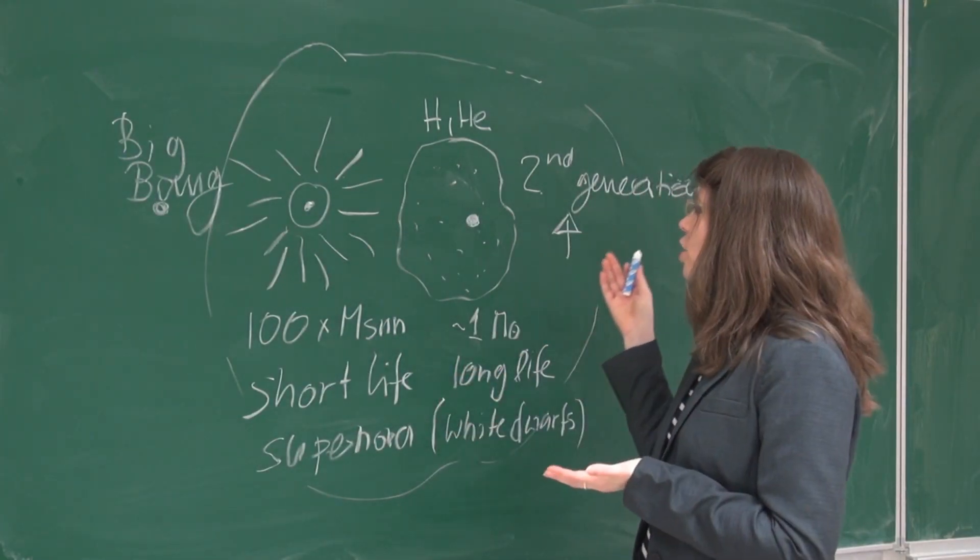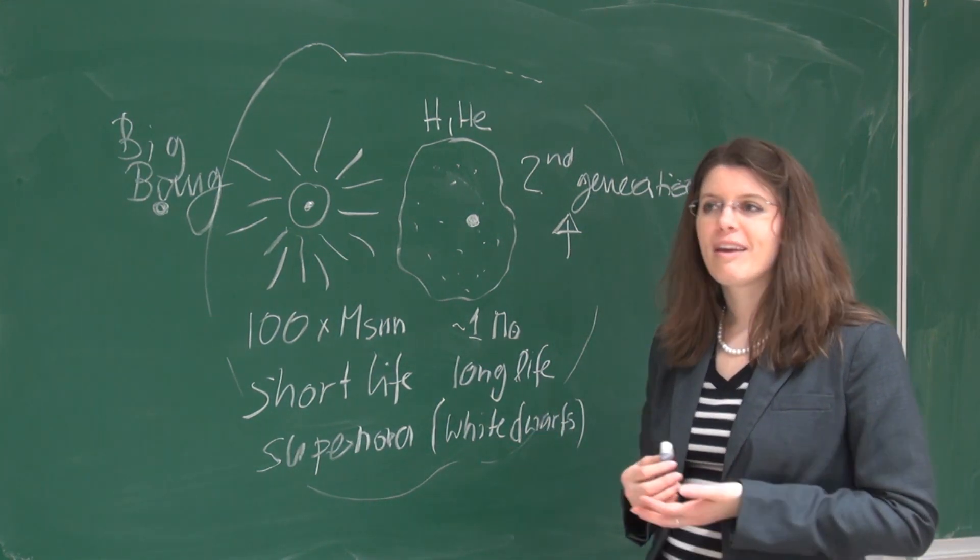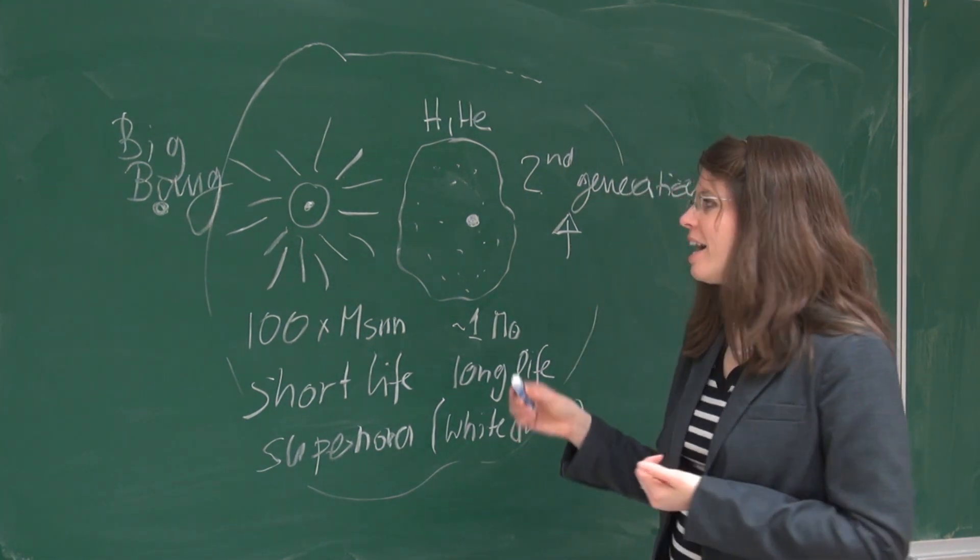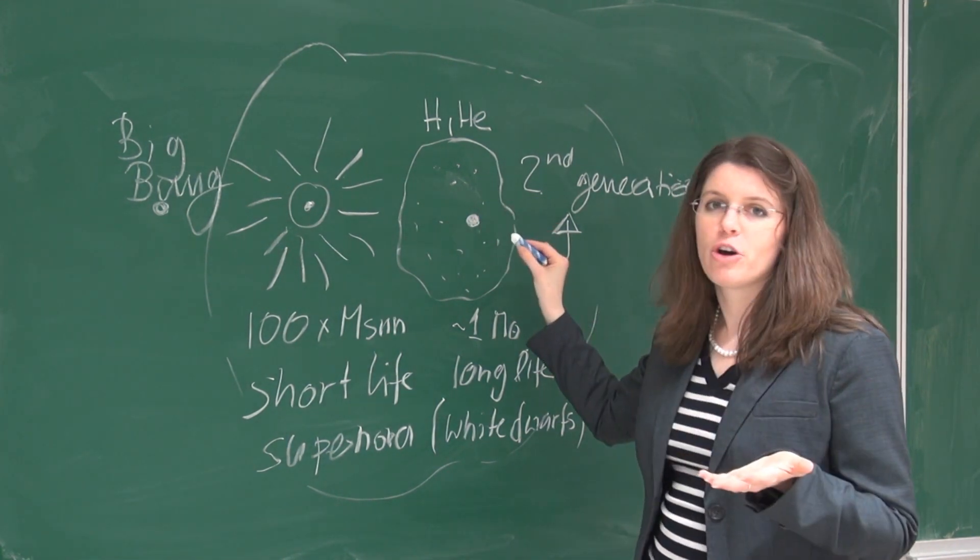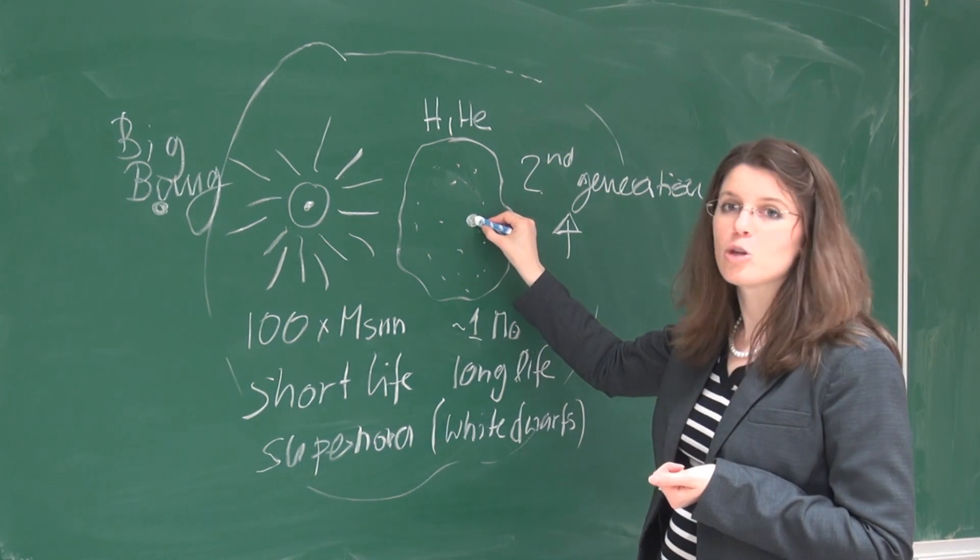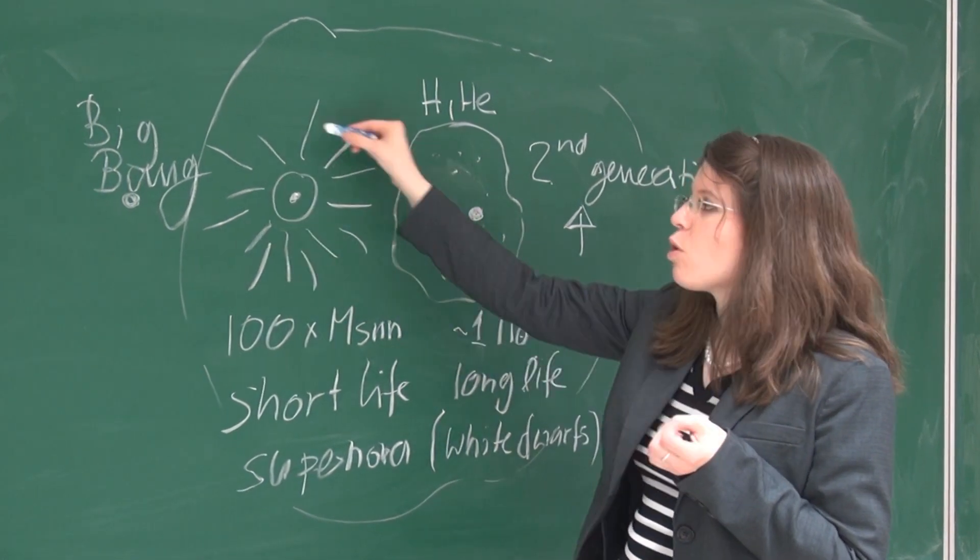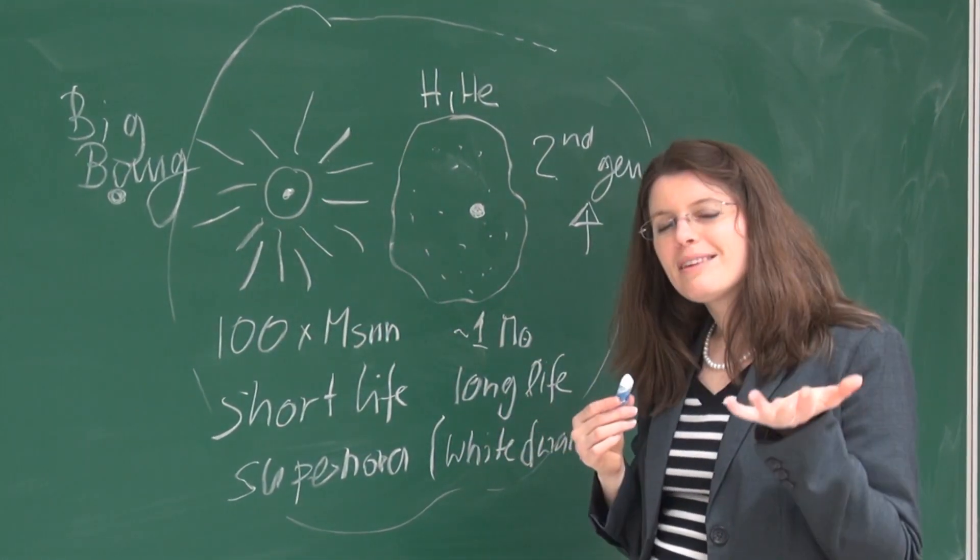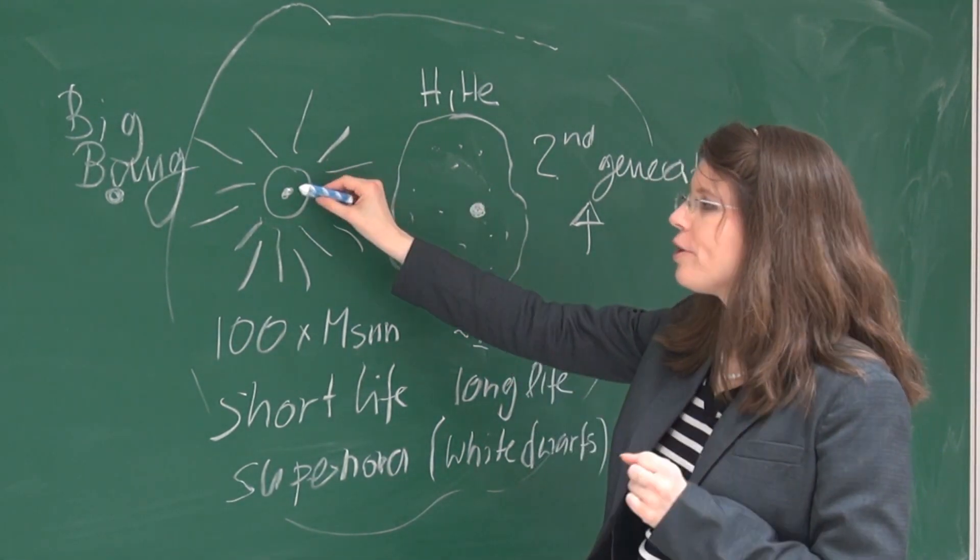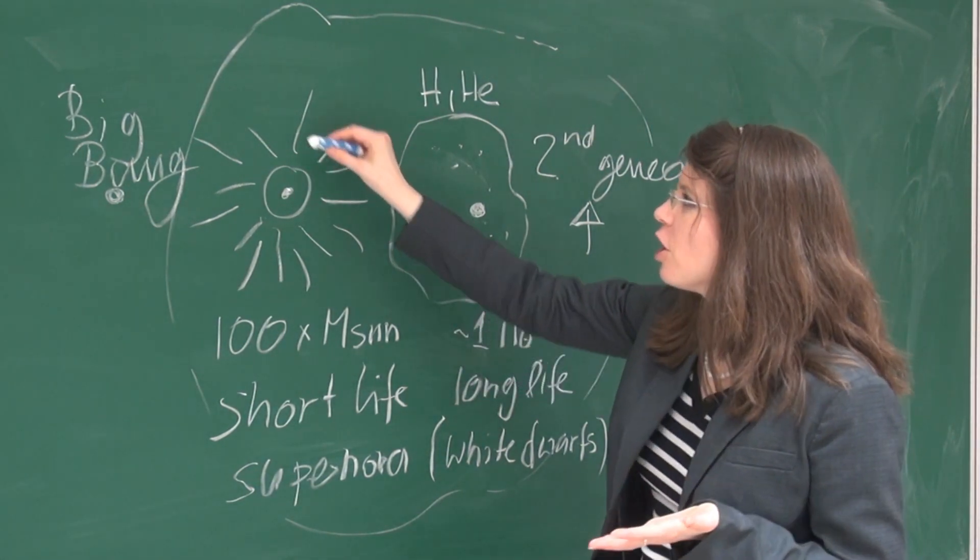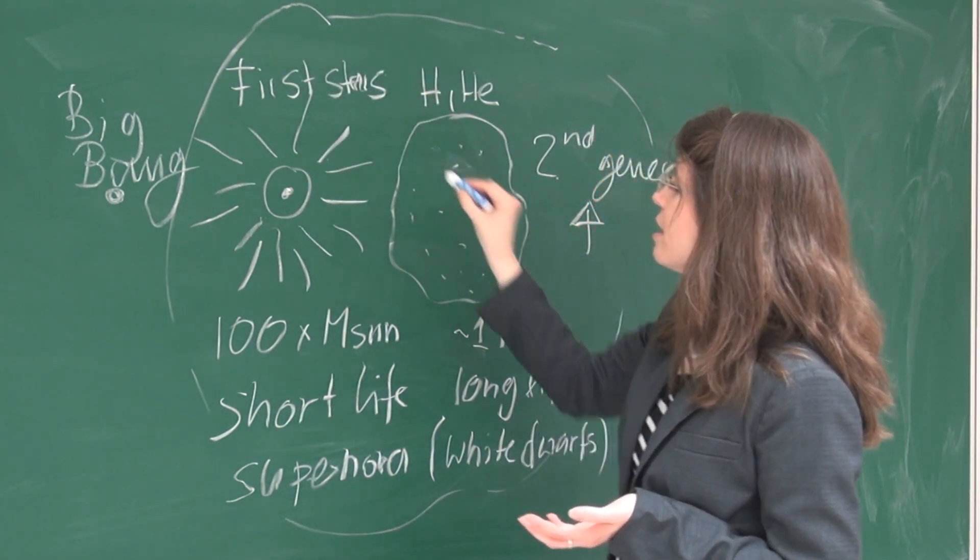So our work on finding these early stars was already successful several times. The last time, in 2005, my team and I found a star where we think it's quite plausible that this was a second generation star because all the elements we measure in this object today are few enough that they can be explained with just one of those first star explosions. But there was a little bit of doubt whether it was really just one supernova explosion.